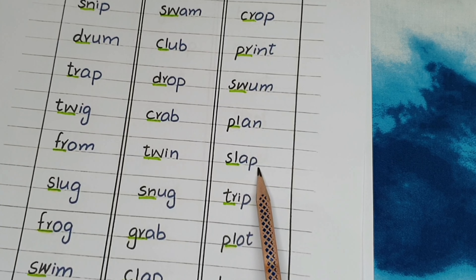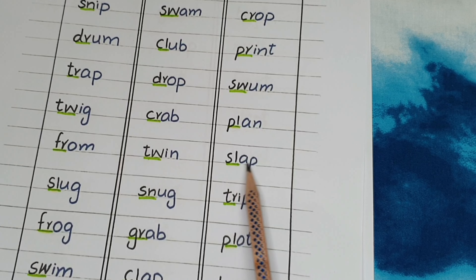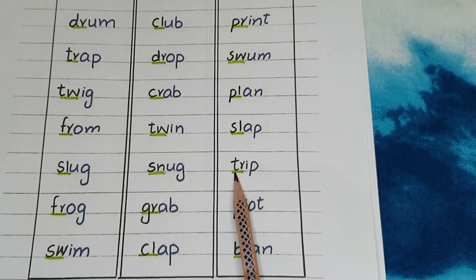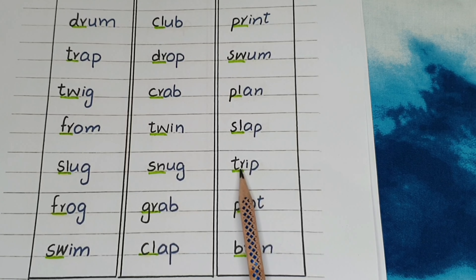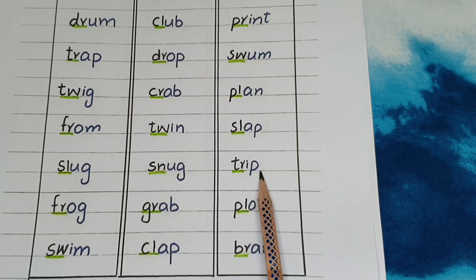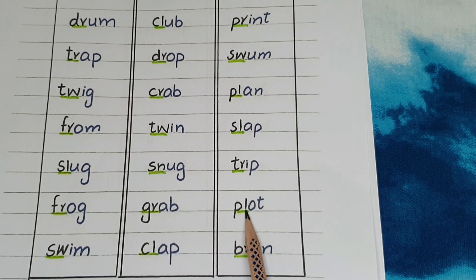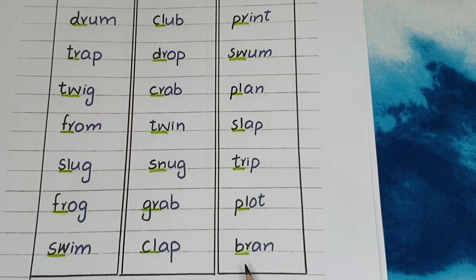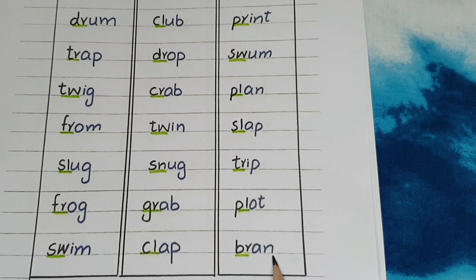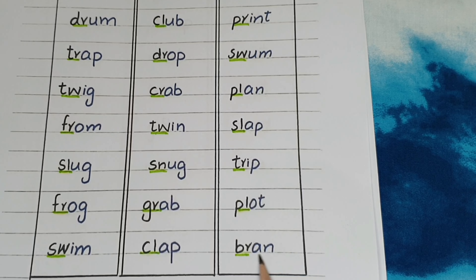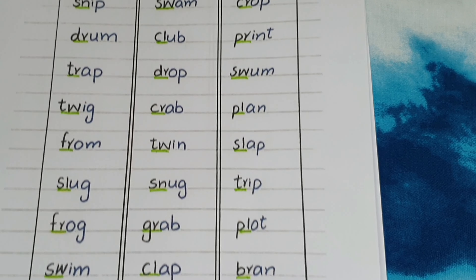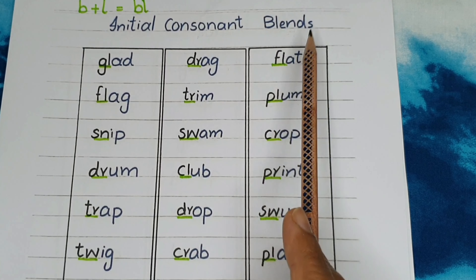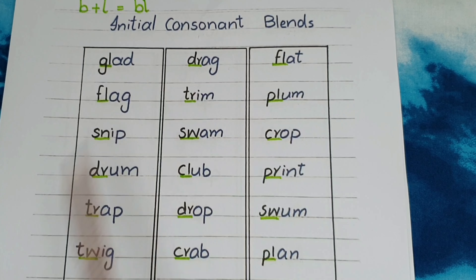Sl, a, p — slap. Ch, a, p — chap. Trip. Pl, a, t — plot. Br, a, n — bran. So these are all initial consonant blends, or beginning blends.